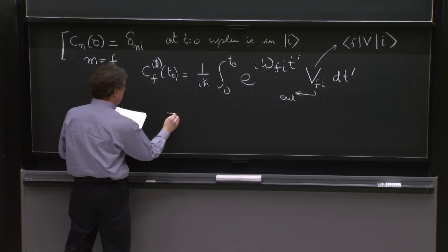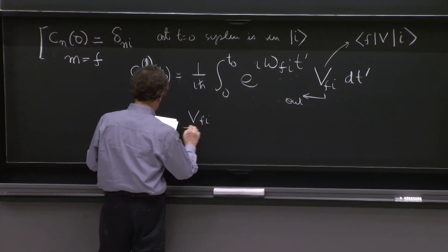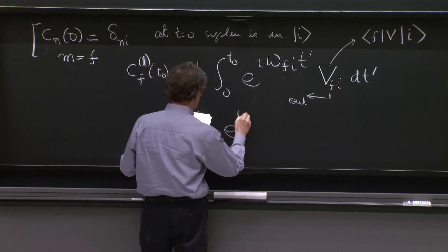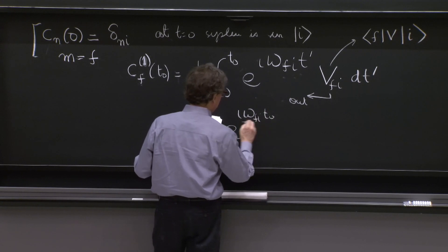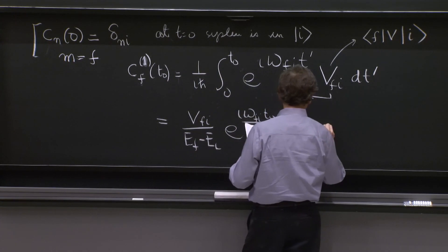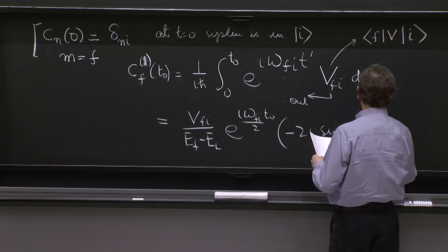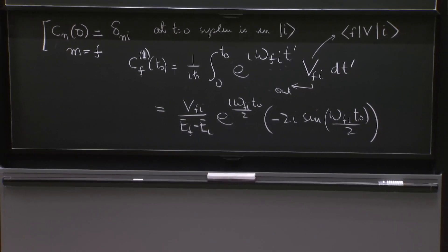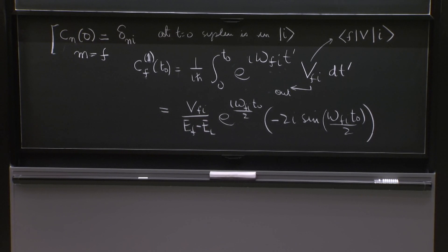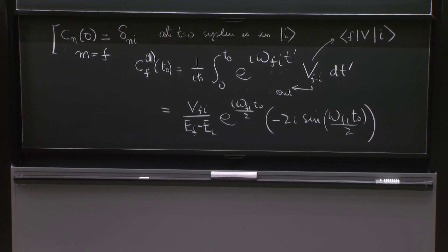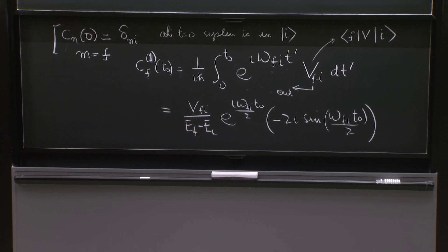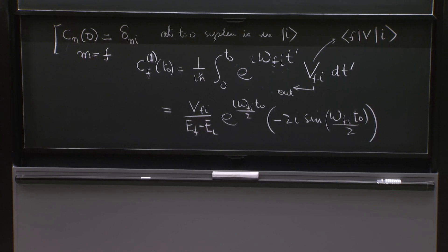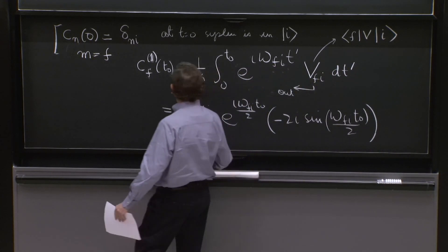These are simple matters. So I will not do the integral here. You get v fi over ef minus ei e to the i omega fi t naught over 2 minus 2i sine of omega fi t naught over 2. You can believe that. But I think you can believe the sine. And I have everything here. The h bar helped turn the omega fi into ef minus ei.